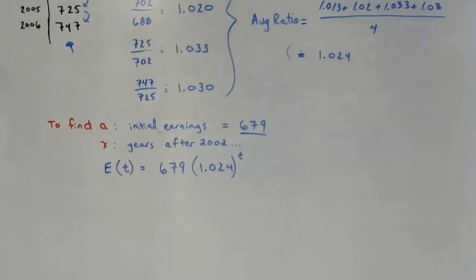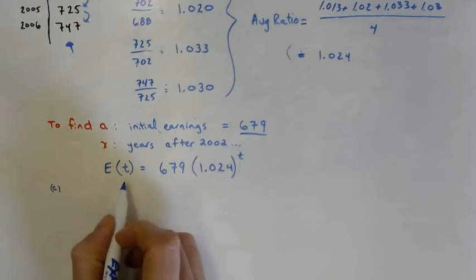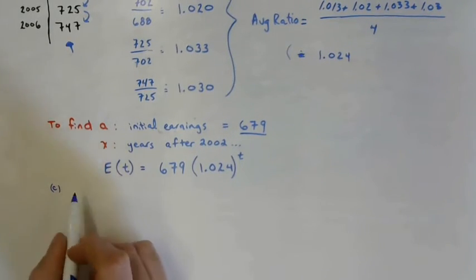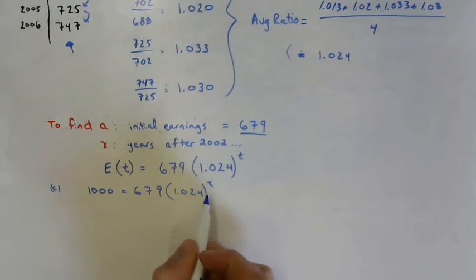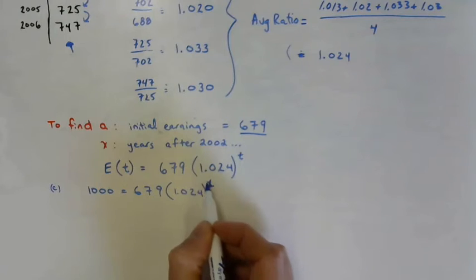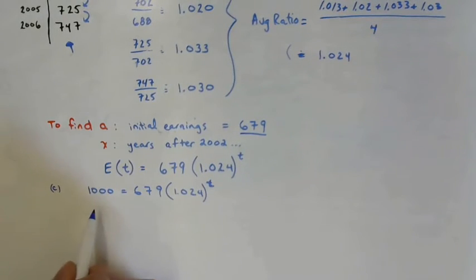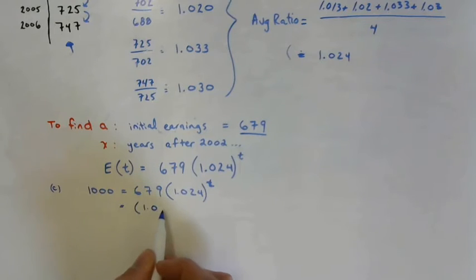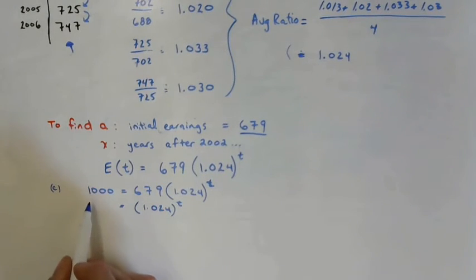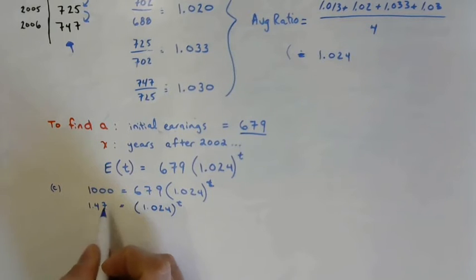In C, we need to predict when the average Canadian might expect to earn $1,000 per week. So for C, we want the earnings, the average earnings per week to be $1,000. So we're going to put in $1,000 there. We don't know what T is. That's what we want to find out. How many years will pass before the average earnings will be $1,000 per week. So I'm going to just simplify this, try to isolate T as best we can. What I can do is divide both sides by 679. So on the right, I'm left with 1.024 to the power of T. And on the left, we have 1,000 divided by 679, which is 1.47. 1.473, if we want to round to three decimal places.